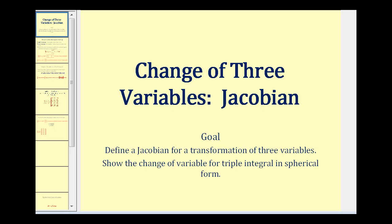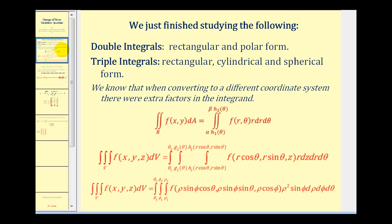Welcome to a lesson on the Jacobian for the change of three variables in a triple integral. We just got done discussing the Jacobian for a change of variables using double integrals. We're also familiar with triple integrals using rectangular, cylindrical, and spherical coordinates. So now we'll define the Jacobian that will allow us to determine the integrating factor when converting to any new coordinate system.